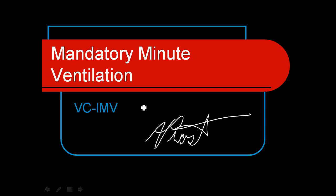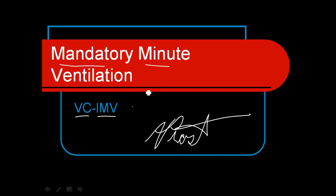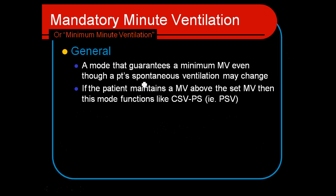Mandatory minute ventilation is a rather unique mode in that it uses volume control and it's an intermittent mandatory ventilation, so it allows spontaneous breathing in and around those mandatory or assisted breaths. What's unique is that it guarantees a specific mandatory minute ventilation and yet allows the patient to spontaneously breathe around that.